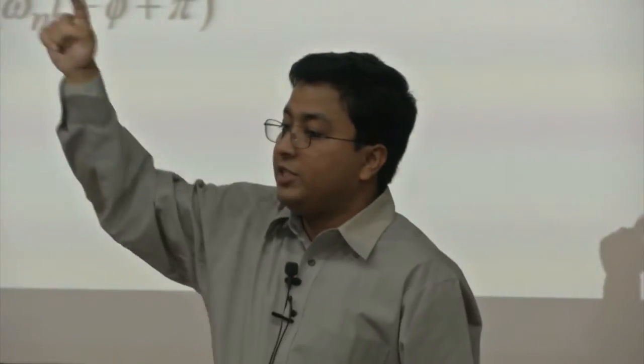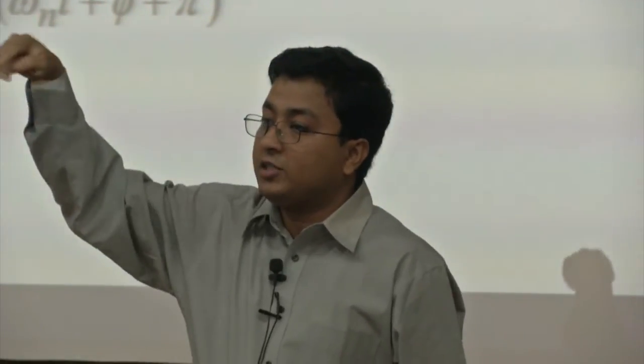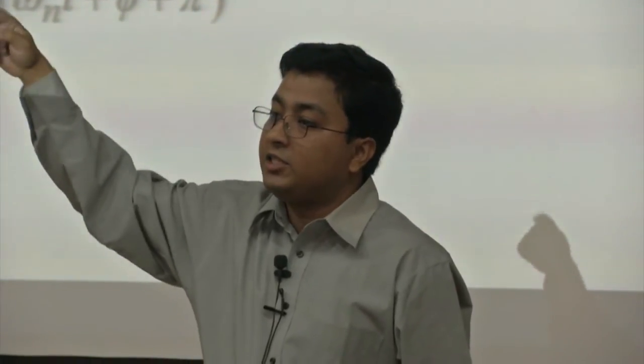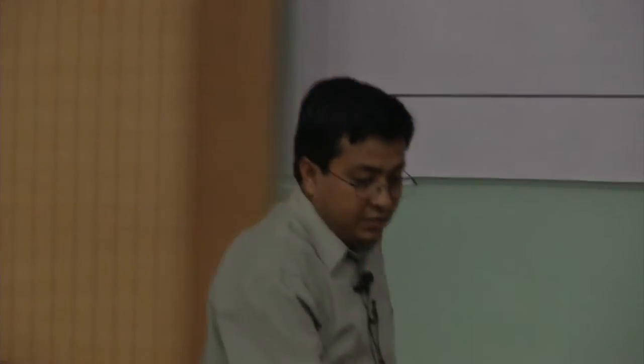Remember x_m equals the square root of (V₀/omega)² plus x₀². This is because we also gave it an initial velocity.